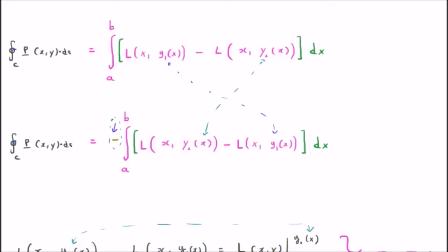Now, I will do something which should become clear in a moment, or the reason for which should become clear in a moment. I'm going to swap the order. So, instead of having L a function of x and y1 minus L a function of x and y2, I'm going to swap them. And, in doing so, I'm going to negate the integral. So, we're going to have minus the integral from a to b of L a function of x and y2 minus L a function of x and y1.